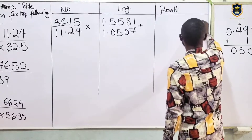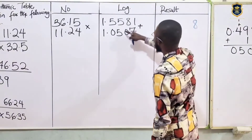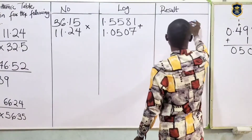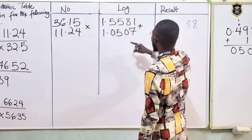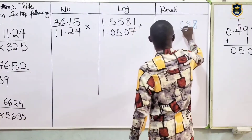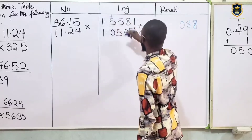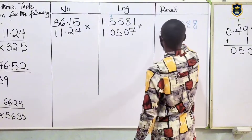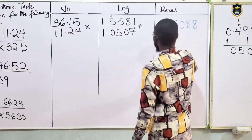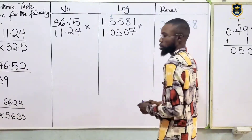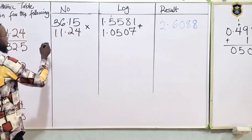1 plus 7 is 8, 8 plus 0 is 8. Also 5 plus 5 is 10 — put down 0, carry 1. Put the 1 here: 1 plus 5 should be 6. And 1 plus 1 is 2. That's the result for the numerator.